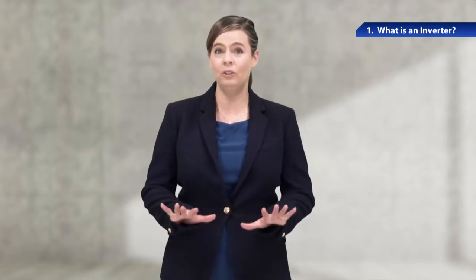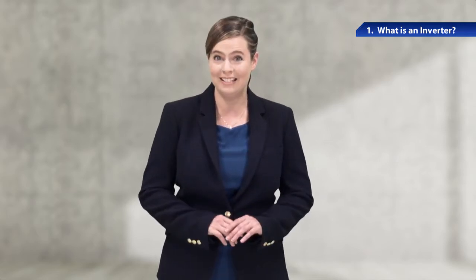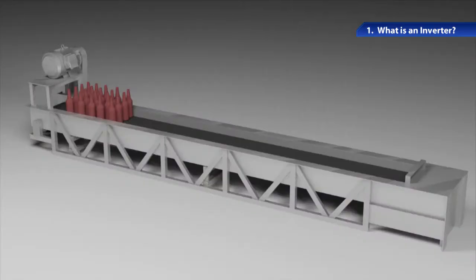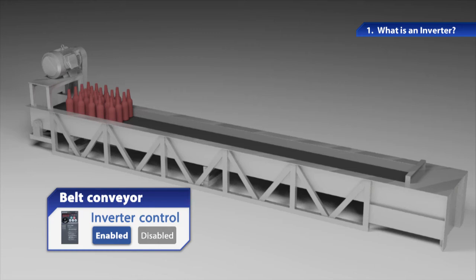Let's take a look at a belt conveyor as an example. This is a belt conveyor controlled by an inverter. You can see this kind of belt conveyor in factories.